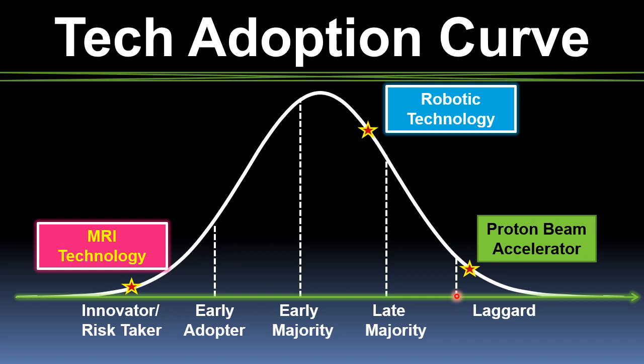It's usually too expensive to invest in every new technology, so you have to pick your spots. Consider a hospital that wants to be an innovator regarding MRI technology and always upgrades to the highest possible Tesla, but wants to wait on adopting robotic technology and definitely wants to delay for a long time acquiring a proton beam accelerator for cancer treatment.